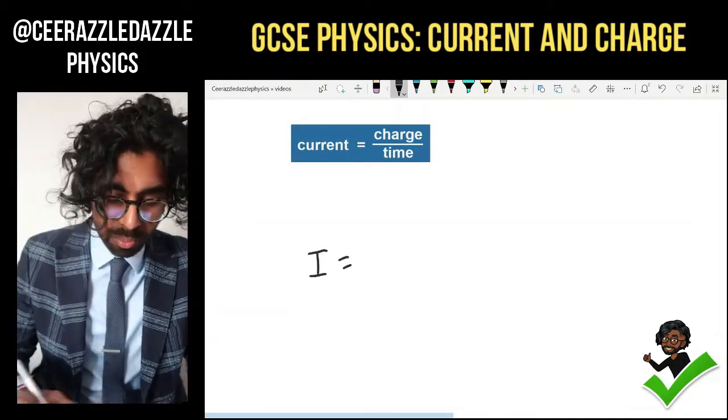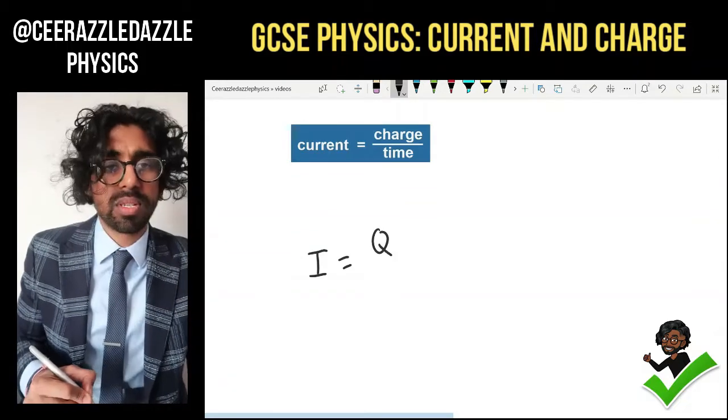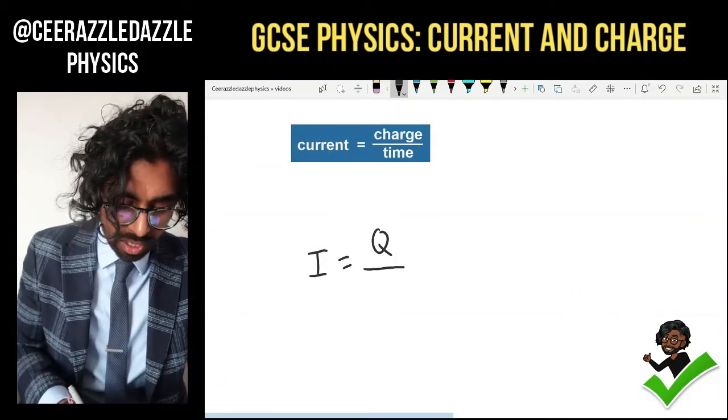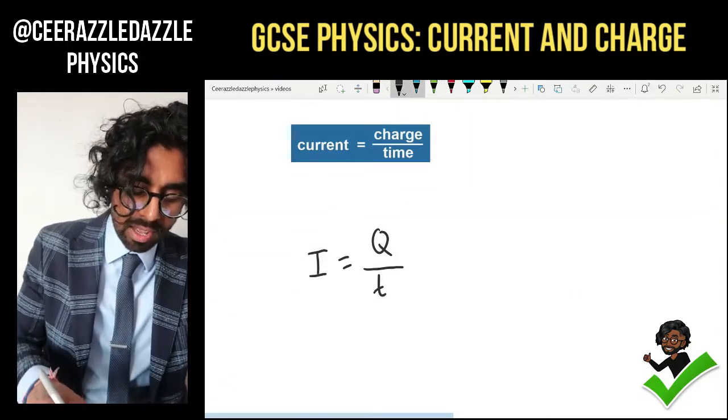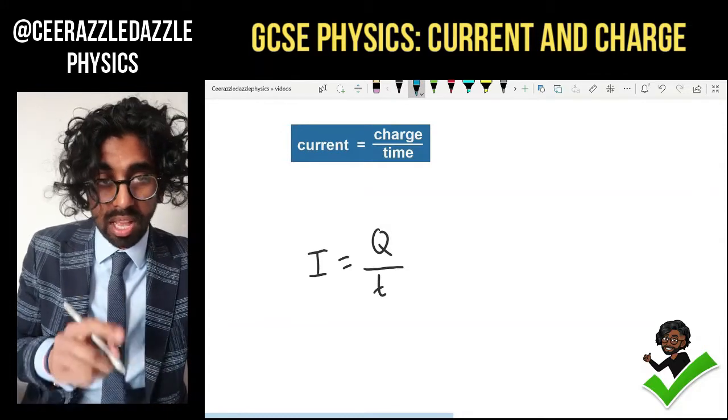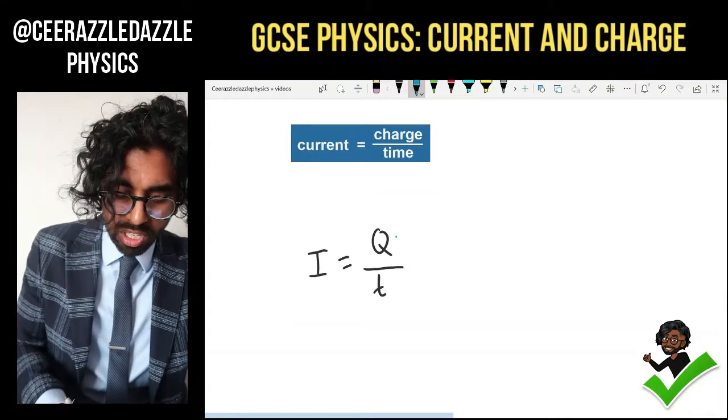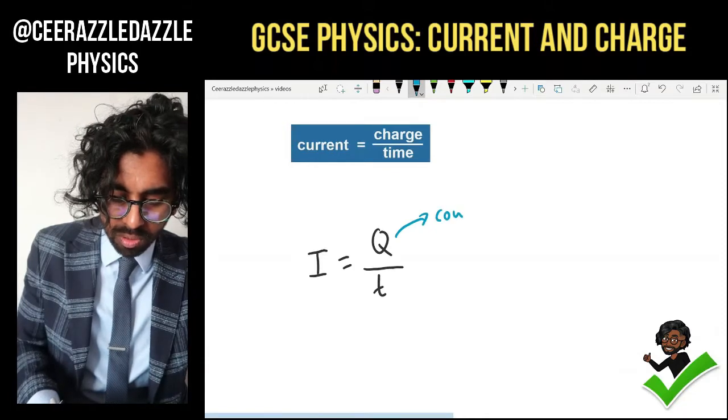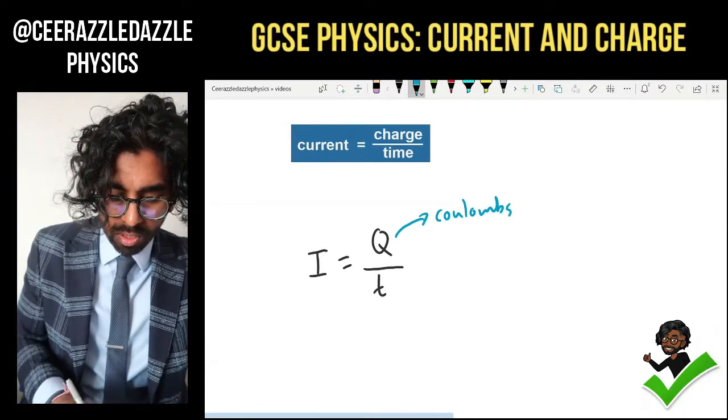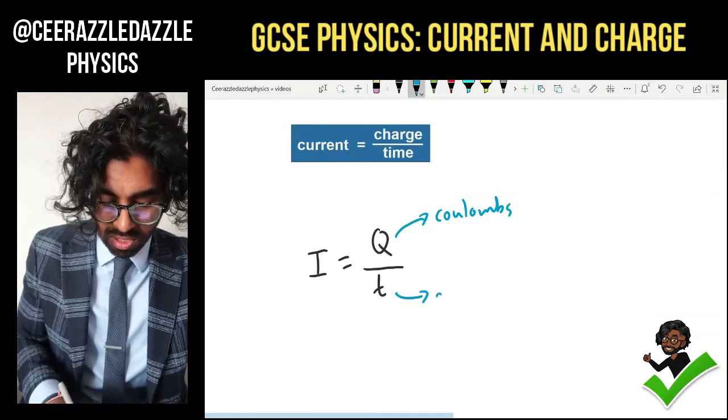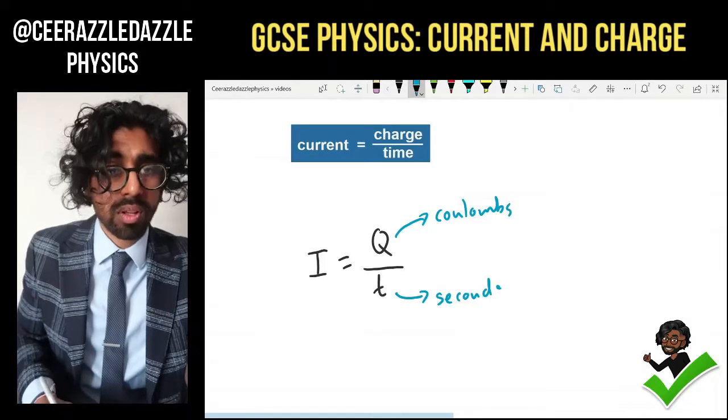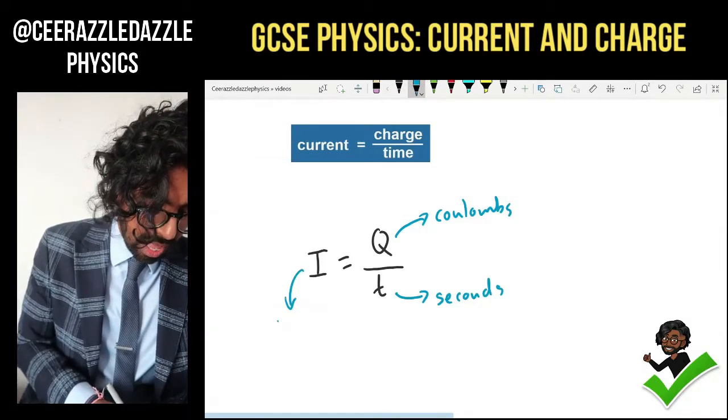Charge is going to be denoted by Q. Time is going to be denoted by lowercase t. Now we need to have the units of each of these quantities, so Q is going to be measured in coulombs. Time is going to be measured in seconds. Current is going to be measured in amps.